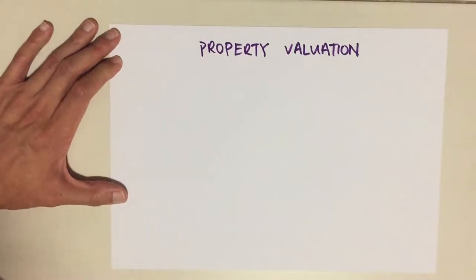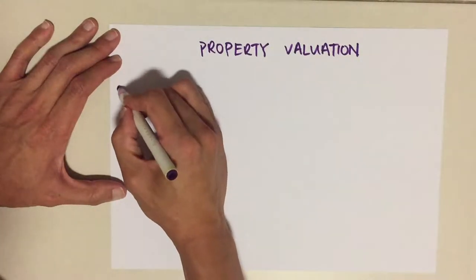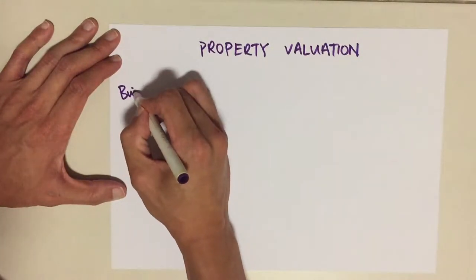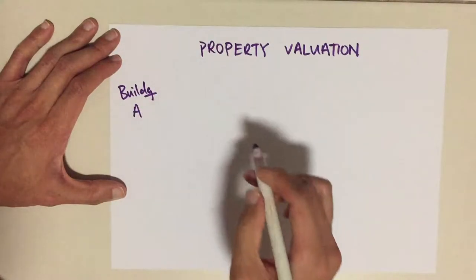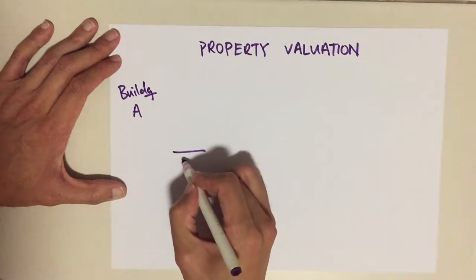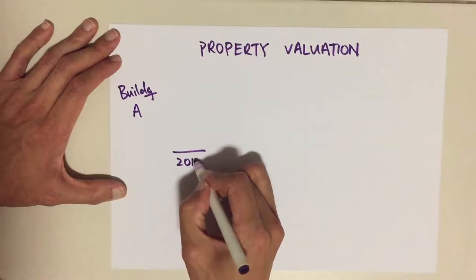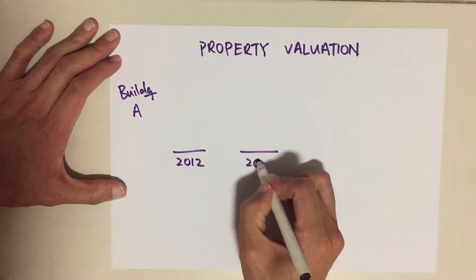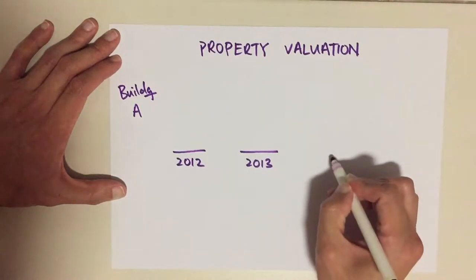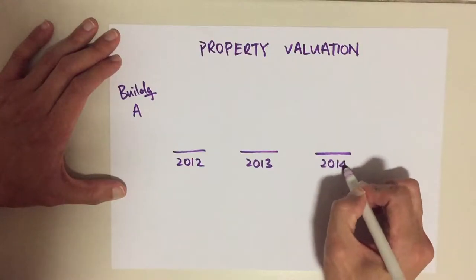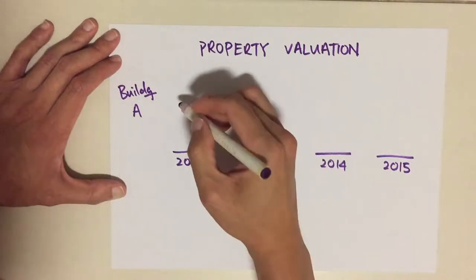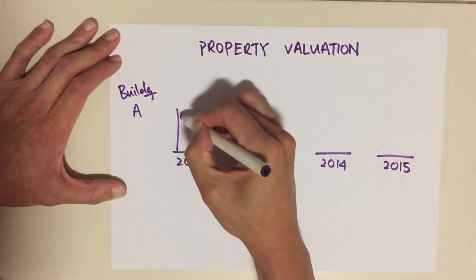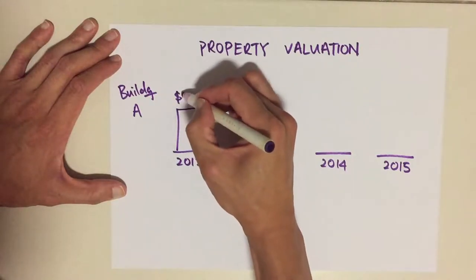Recently one of my readers saw a way to buildings, but I'm going to just use one of the buildings as an example. In 2012, 2013, 2014, 2015 — initially the building was bought for 1 billion.